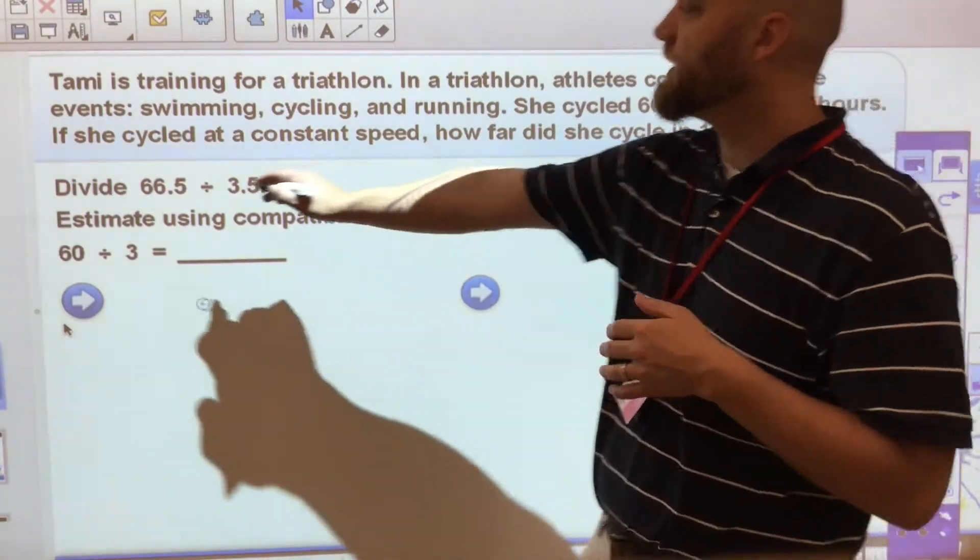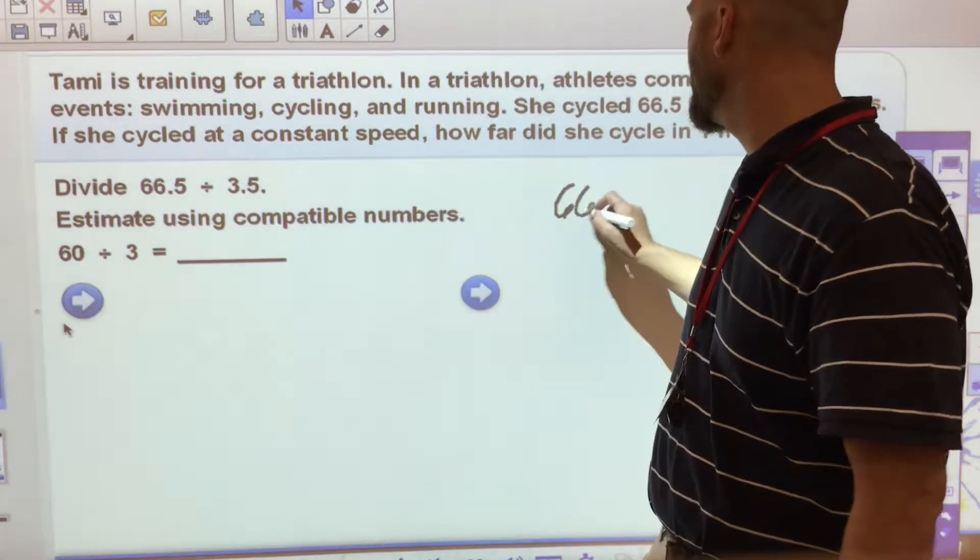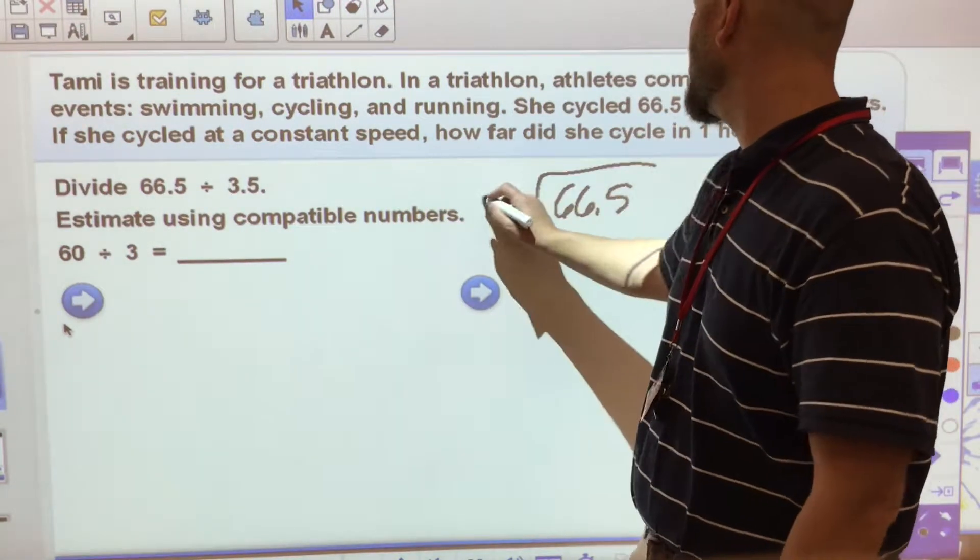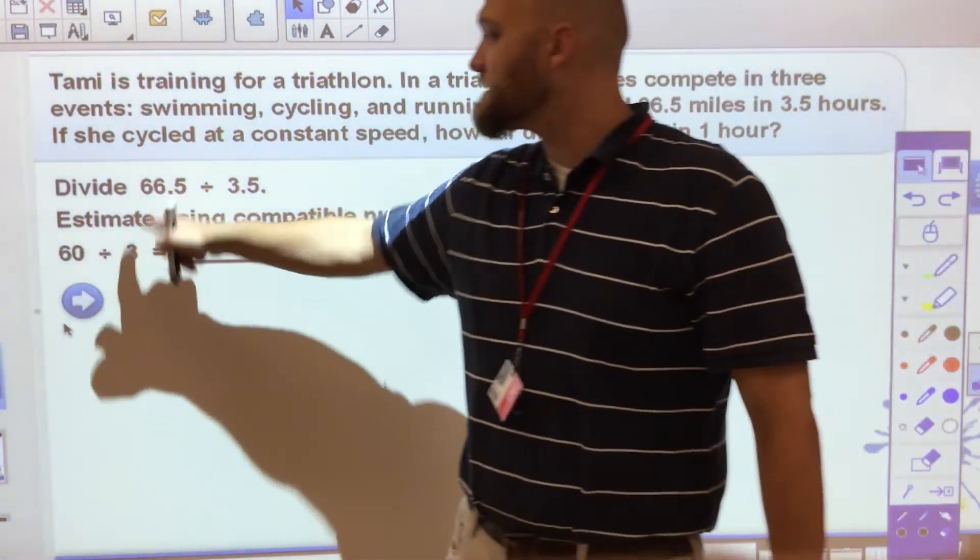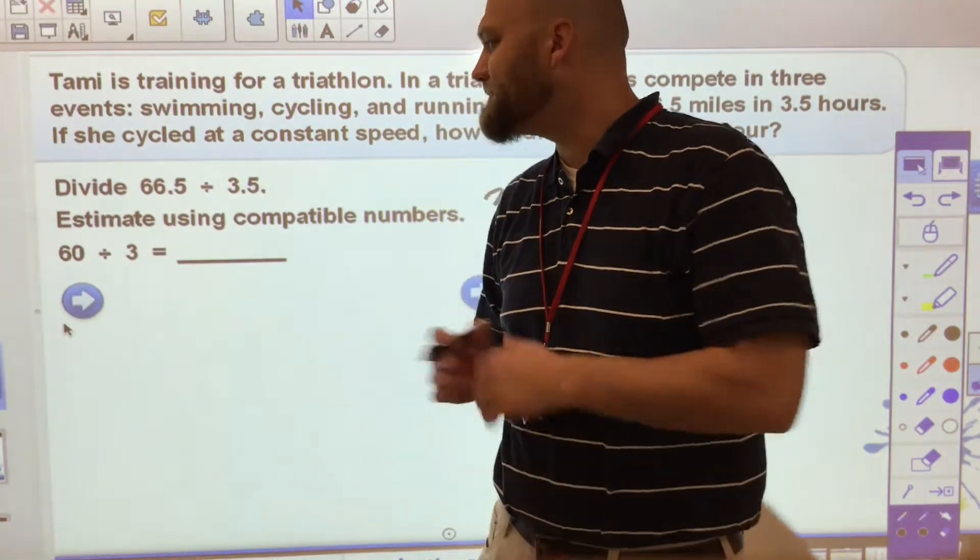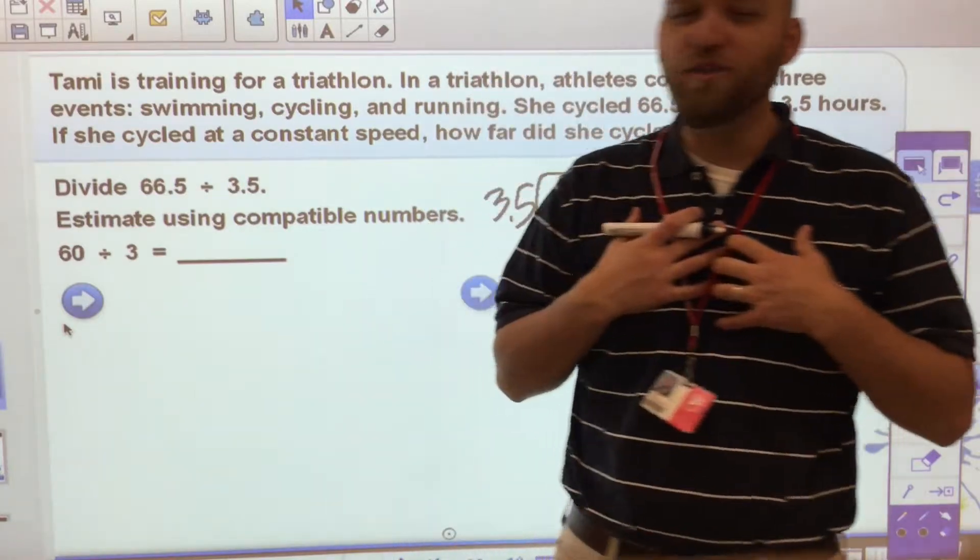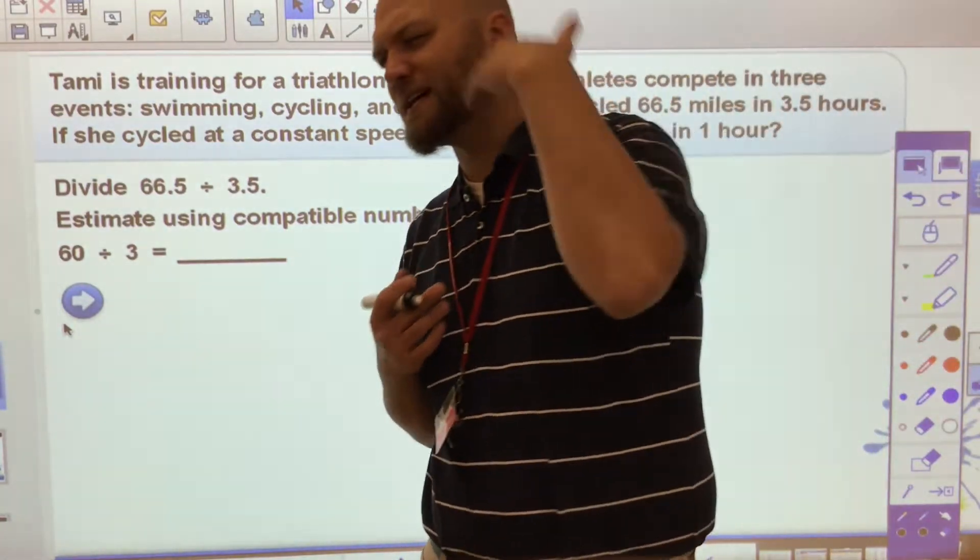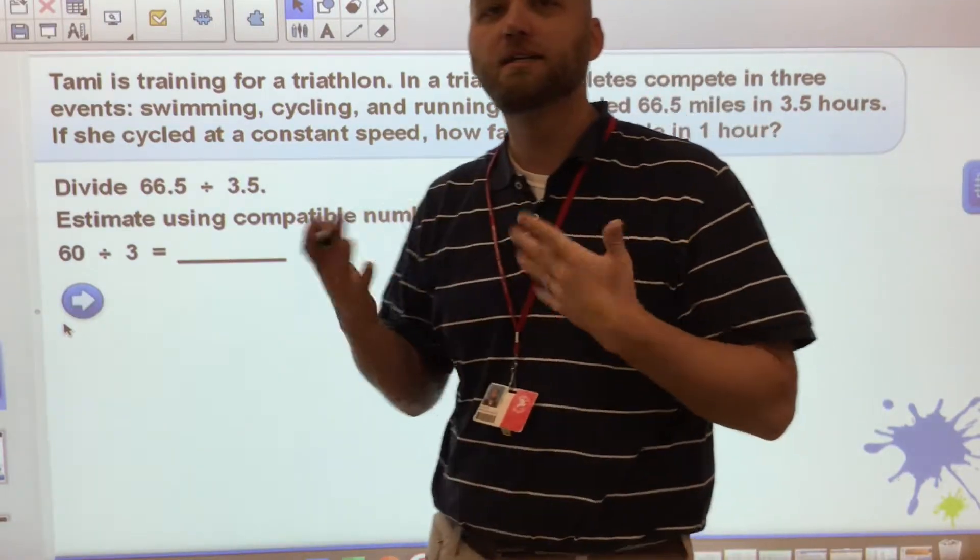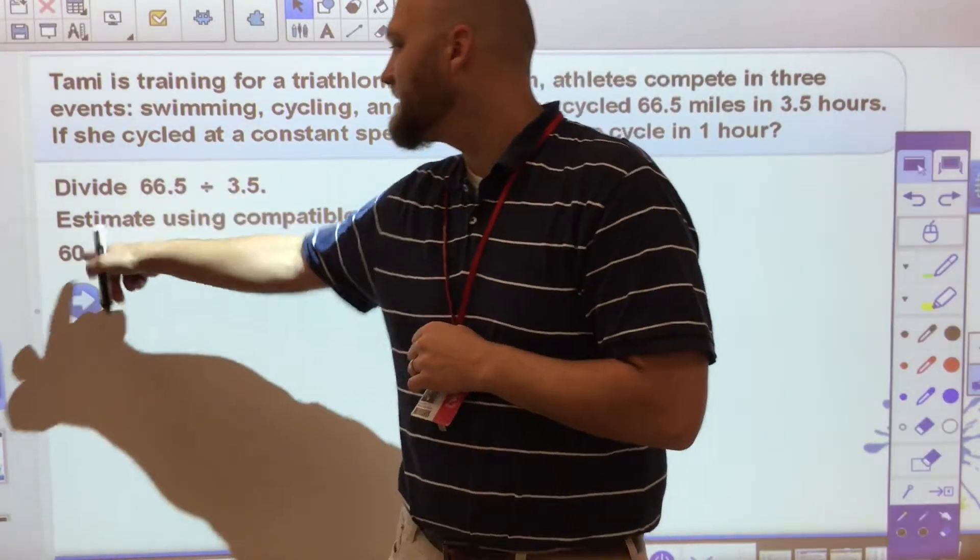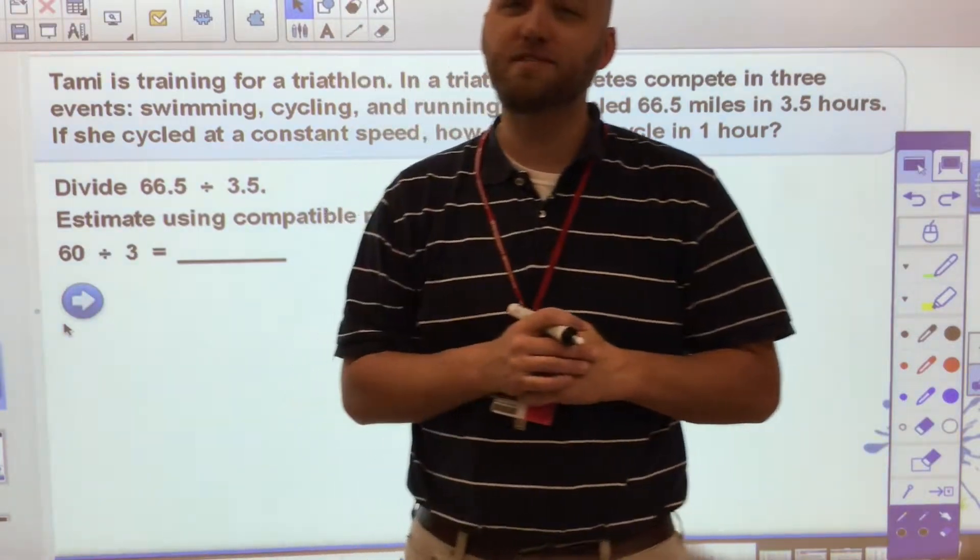So really, we're looking at 66.5 divided by 3.5. First, I estimate 66.5. I know that part of me says that should go to 67 or 70. But I'm just looking for numbers that are compatible, that very easily divide in my head. In this case, they took 66.5 and they rounded down to 60.